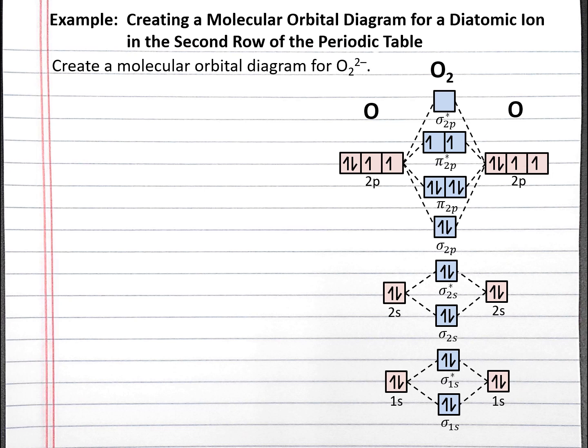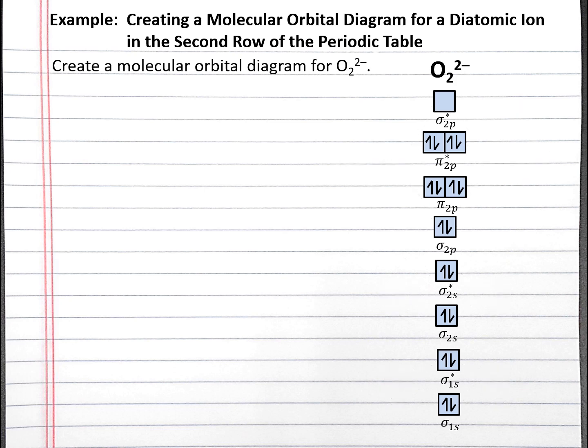This is the molecular orbital diagram for O2. To adjust this diagram for peroxide, which is O2 2-, we need to add two additional electrons because of the 2- charge. So we'll put those two electrons in the pi 2p antibonding molecular orbitals. In creating the molecular orbitals, we used up the atomic orbitals, which no longer exist. This is our molecular orbital diagram for peroxide.